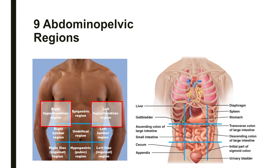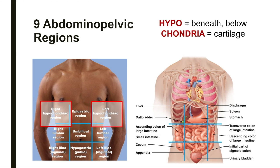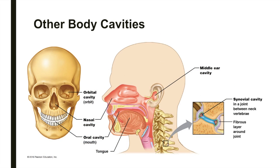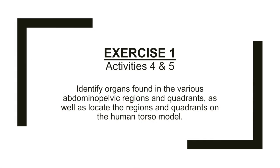Hypochondria can be broken down into the prefix hypo, meaning beneath or below, and chondria, referring to the cartilage or breastbone. In addition to the large closed body cavities, there are many smaller body cavities: the oral cavity, nasal cavity, orbital cavities, middle ear cavities, and synovial cavities, or joints. In activities four and five, you will identify organs found in the various abdominal pelvic regions and quadrants, and locate those regions and quadrants on the human torso model.